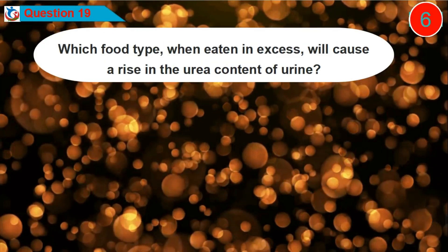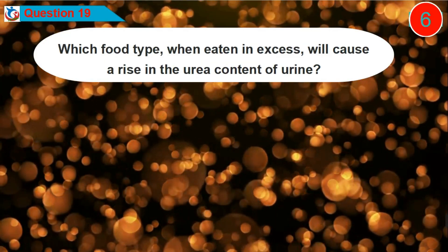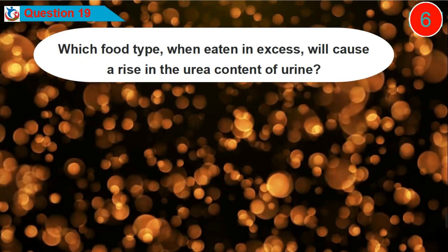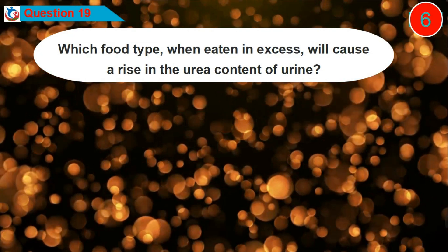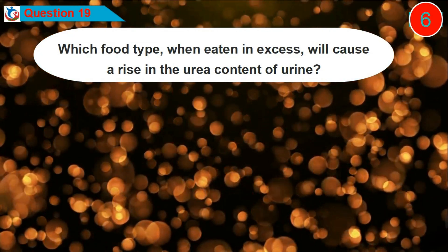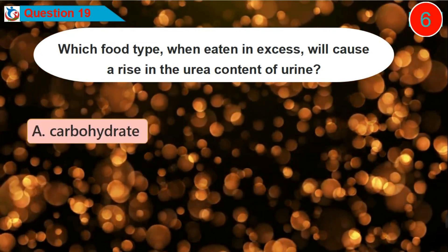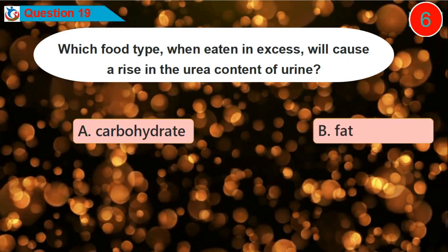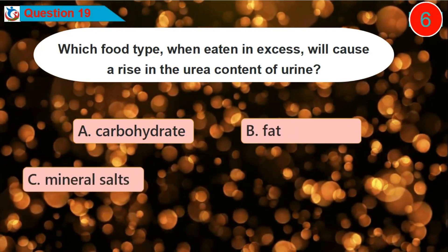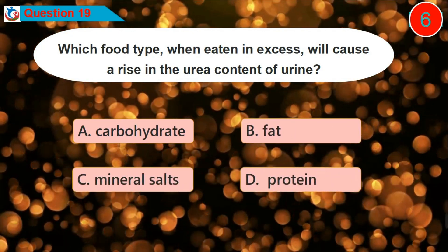Question 19. Which food type, when eaten in excess, will cause a rise in the urea content of urine? Is it option A, B, C, or D?